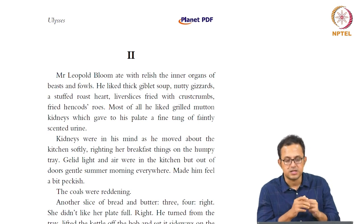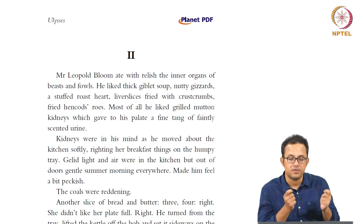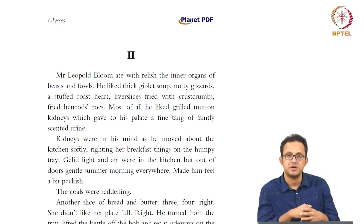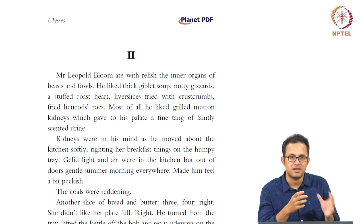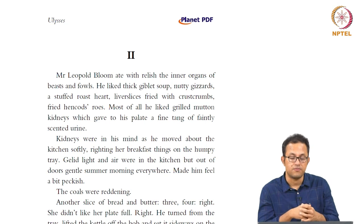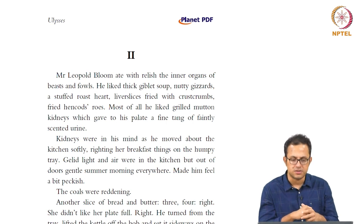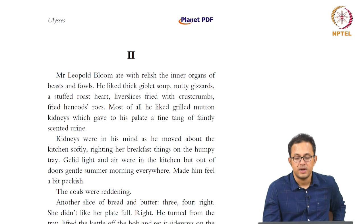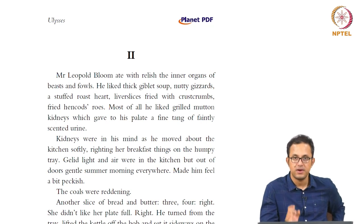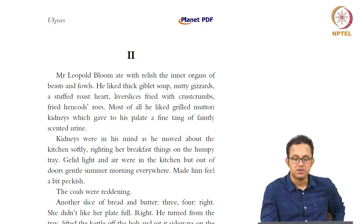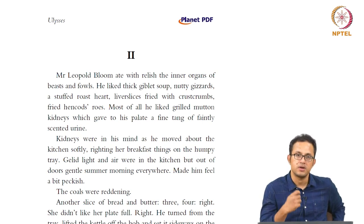In this very section where Bloom appears for the first time, we see different kinds of food metaphors used in very graphic detail, especially meat metaphors. The constant connection to Jewishness is something we should never lose sight of, as it is foregrounded here. The very first sentence reads: 'Mr. Leopold Bloom ate with relish the inner organs of beasts and fowls.' It has an almost cannibalistic quality — he eats with relish the inner organs, almost like a carnivore or cannibal. The consumption narrative is very much foregrounded in Ulysses.